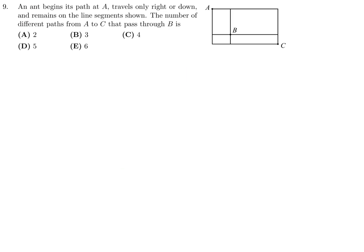An ant begins its path at A, travels only right or down, and remains on the line segments shown. The number of different paths from A to C that pass through B is? Here's one path. And then let's backtrack a little bit, and instead of going that way, we can go this way. So I just got 2 paths when I went that way. But how about if I go this way? Then I end up at B by going in that direction. Here's my third path. And then here is my fourth path. That's pretty straightforward. Number 9, the answer is 4, so that would be C.